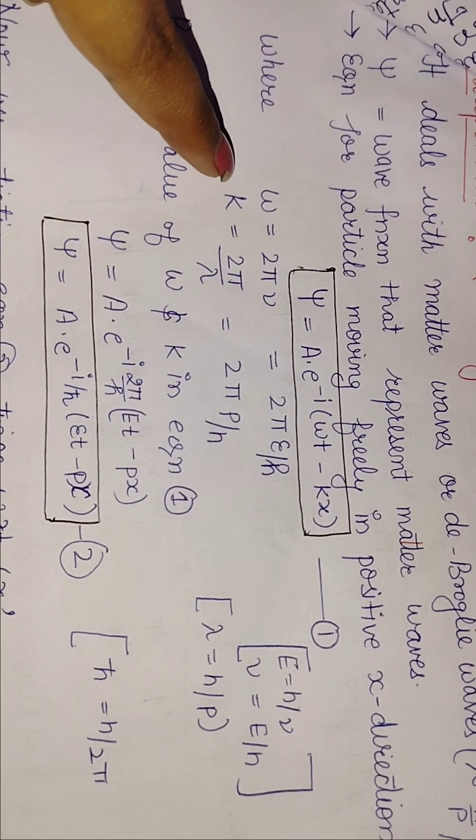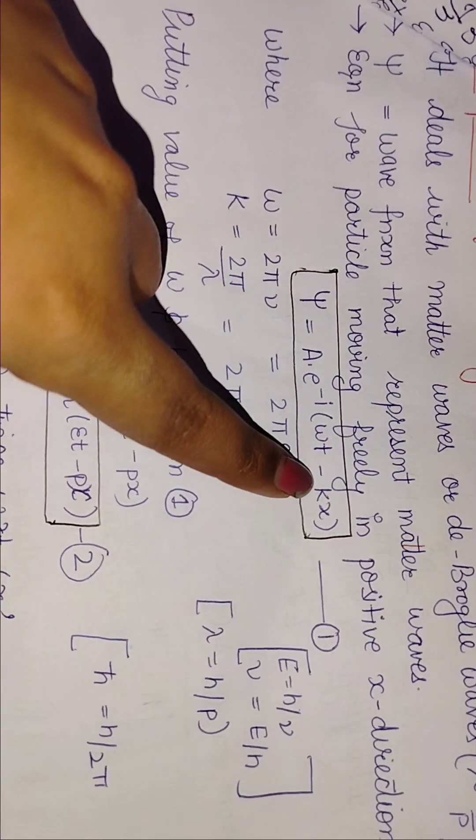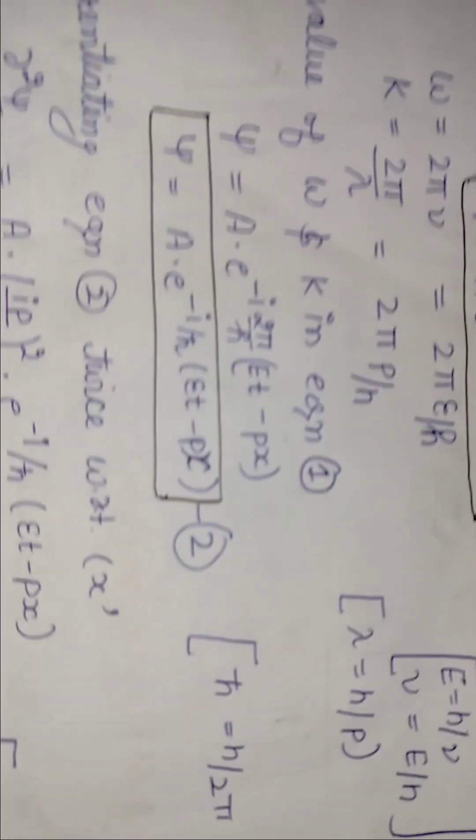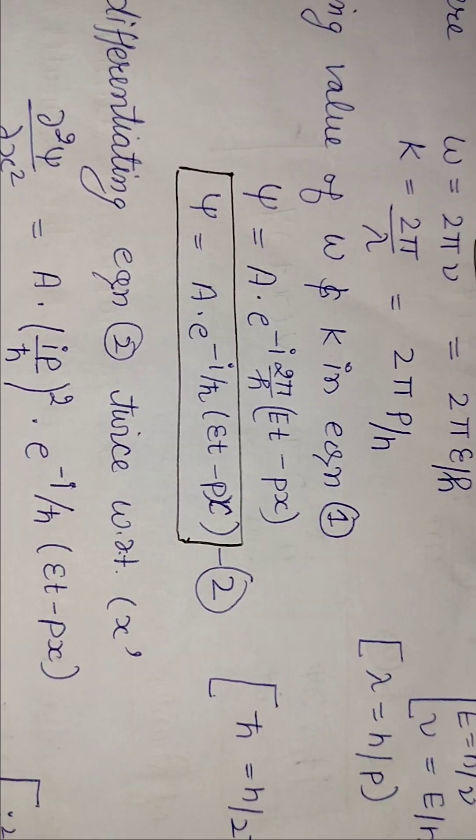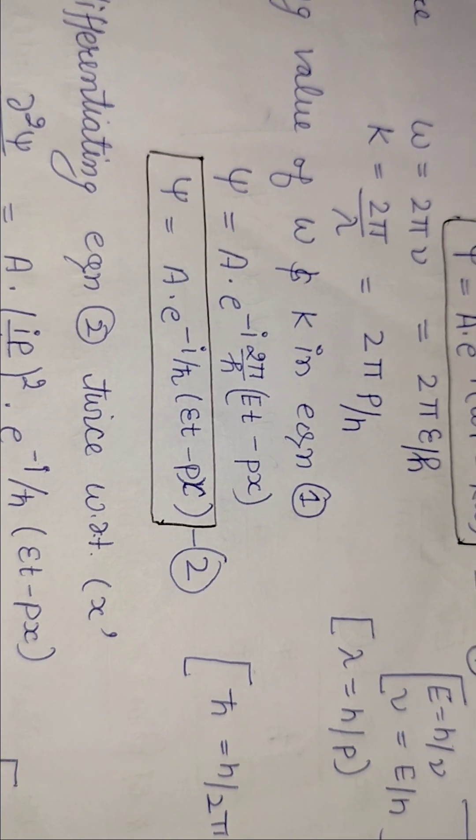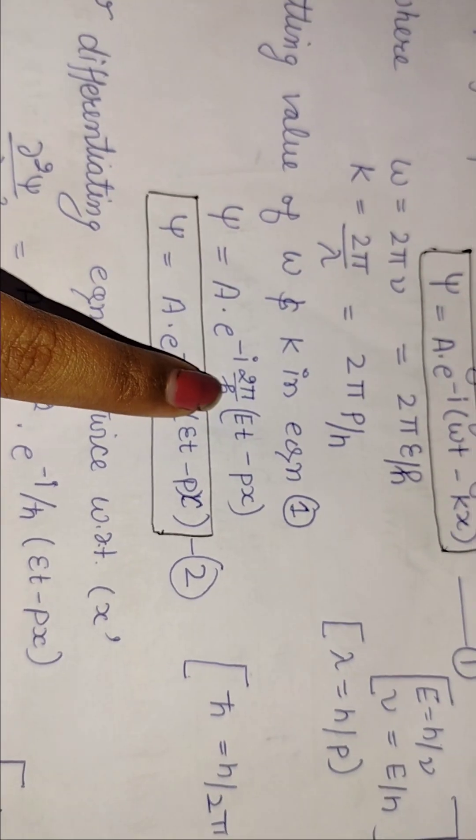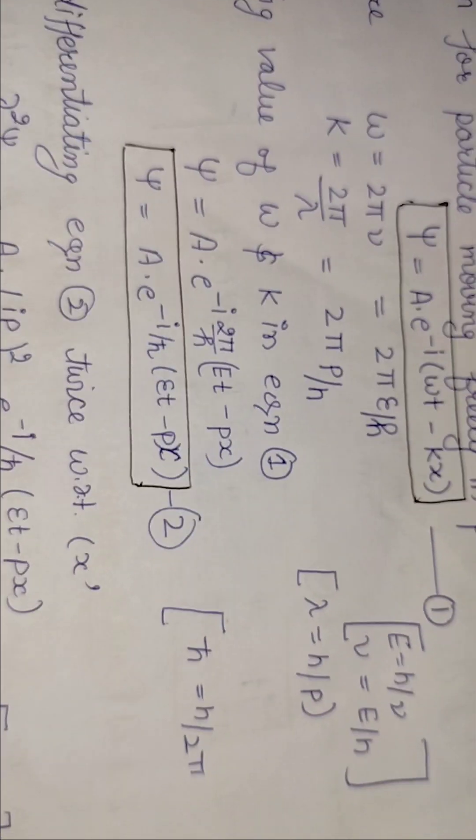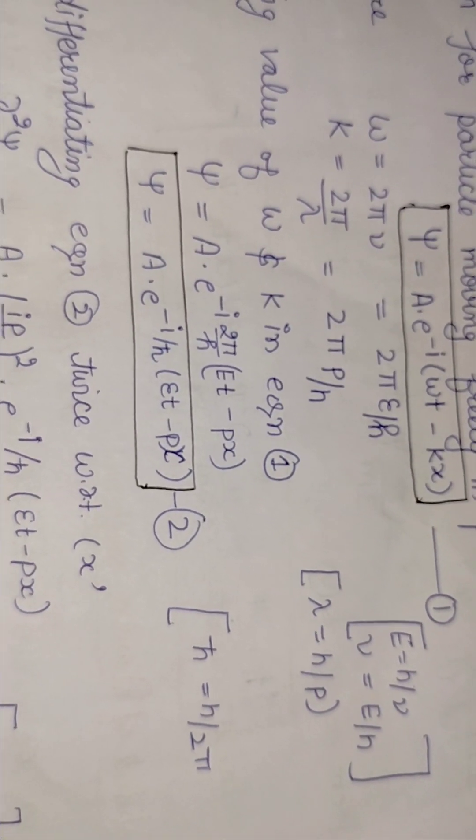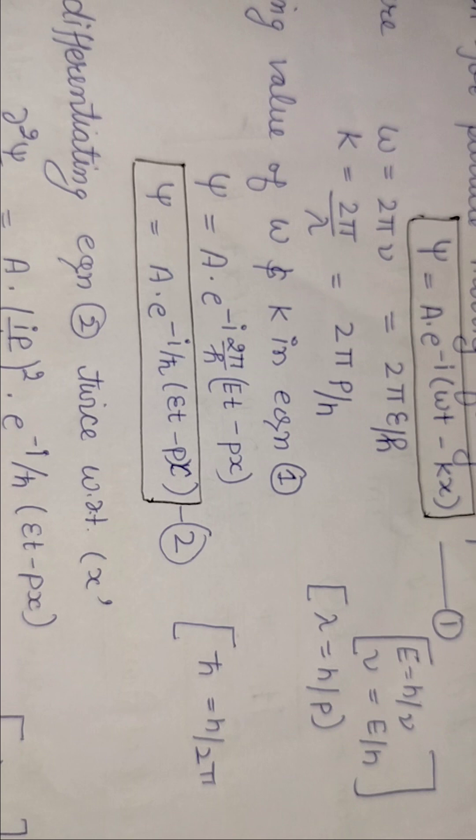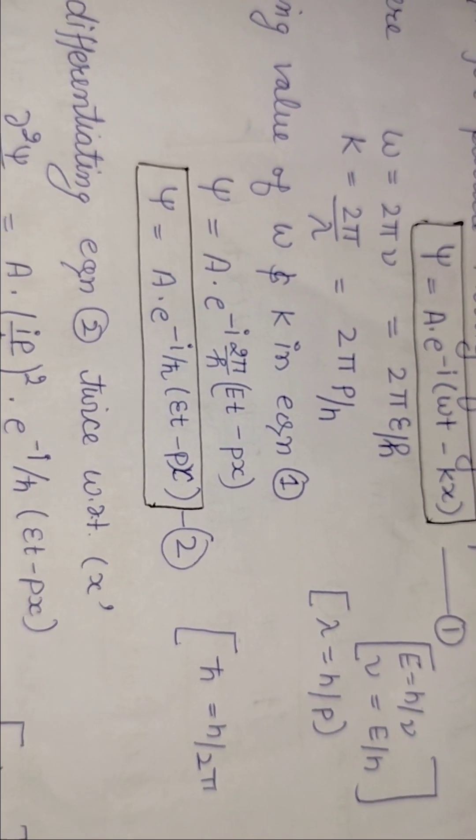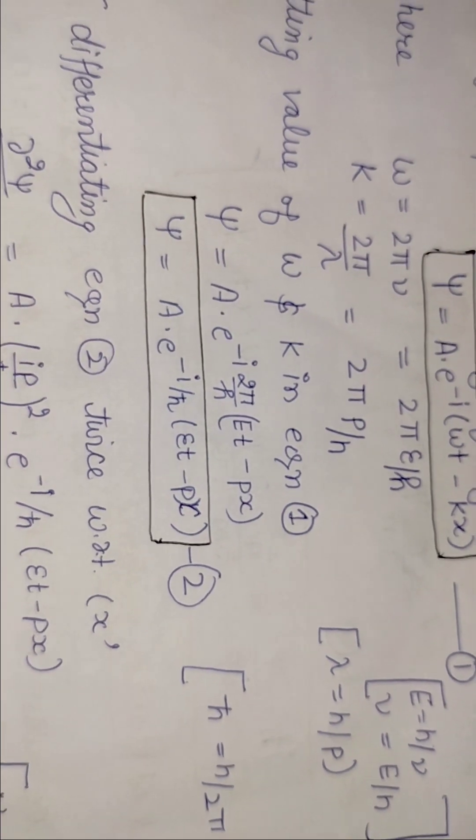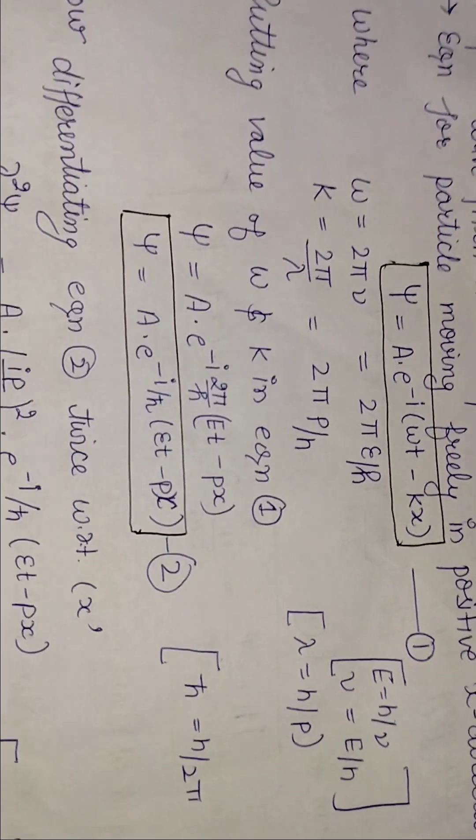So now, these two values we will put in equation 1. So let's go ahead, we will do the steps. We will put them here. So here we get ħω, and here minus i/ħ. So this is our equation 2.